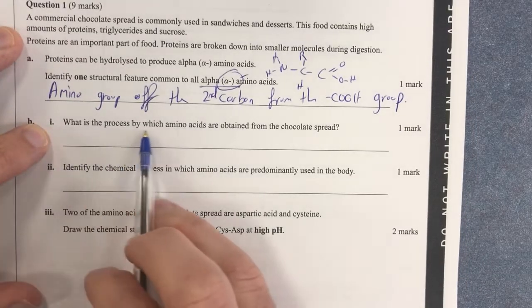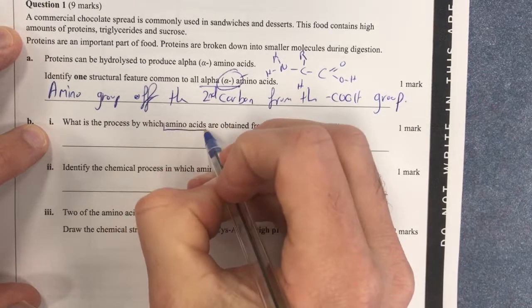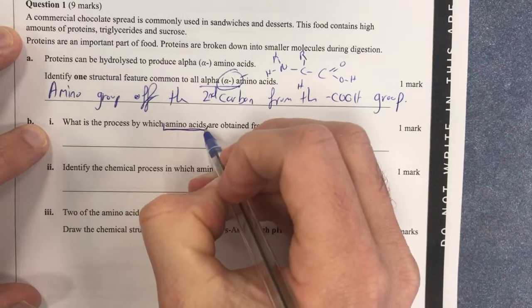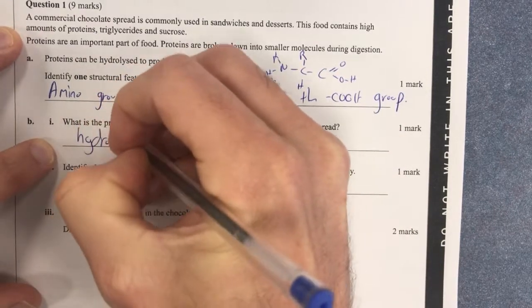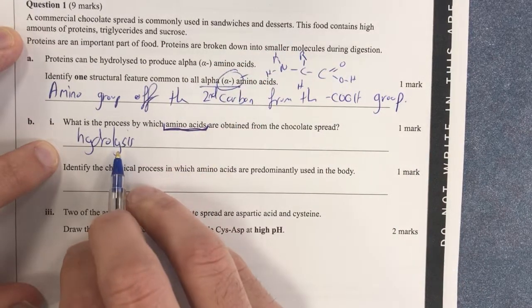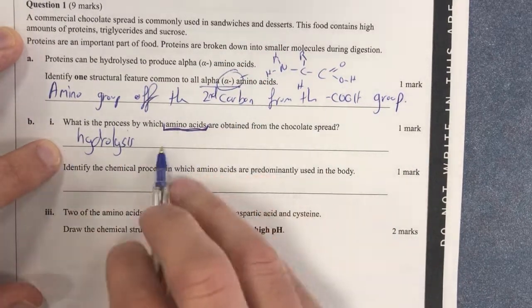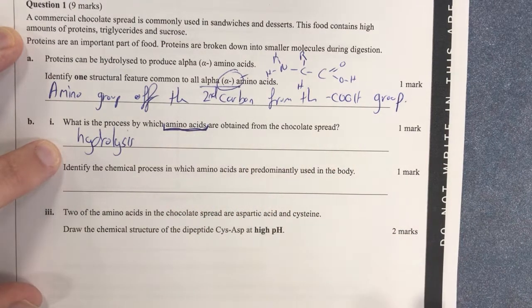What is the process by which amino acids are obtained from the chocolate spread? So how do we get amino acids? Well, they're from the proteins and amino acids are separated by a hydrolysis reaction. So therefore they are liberated from our proteins. So how do proteins get broken down? Basically, what is this question asking?